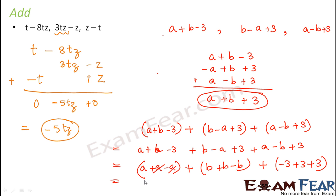So a plus a minus a gets cancelled. So you are left with a. Again, plus b minus b gets cancelled. So you are left with b. Again, minus 3 plus 3 gets cancelled. So you are left with 3. So in this case also, you get the same answer.